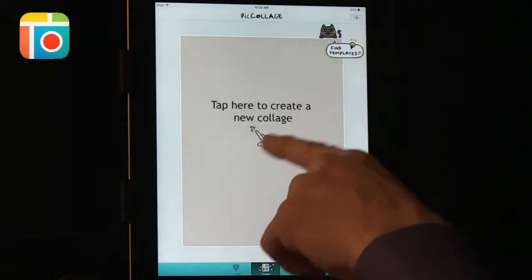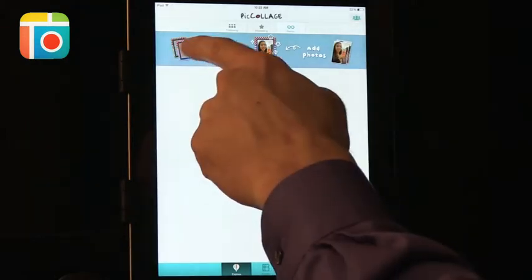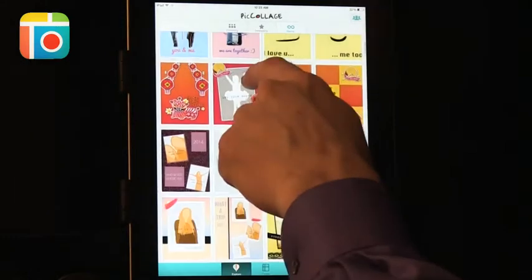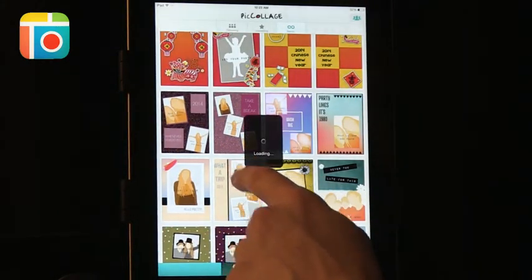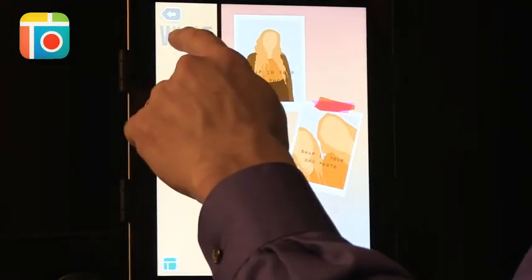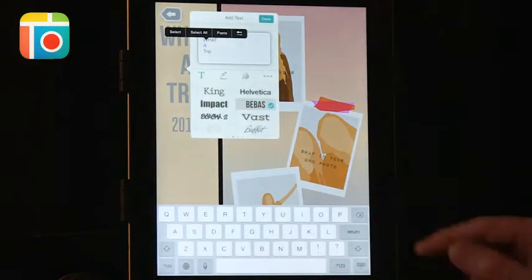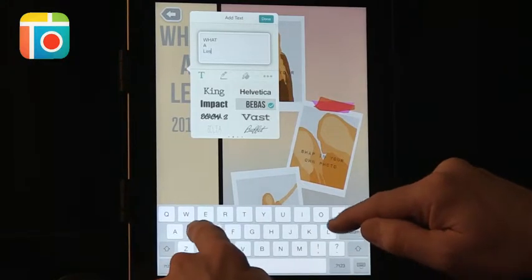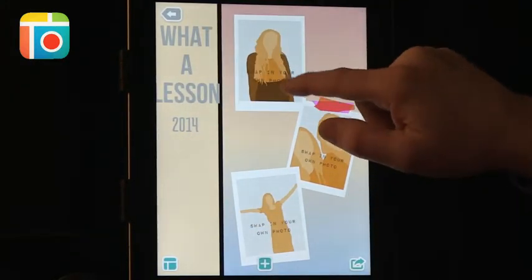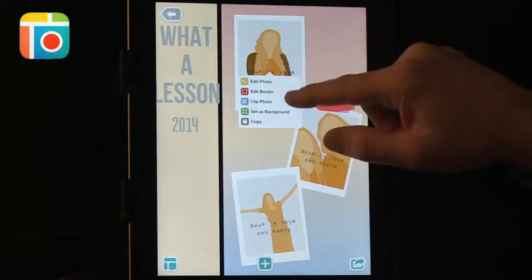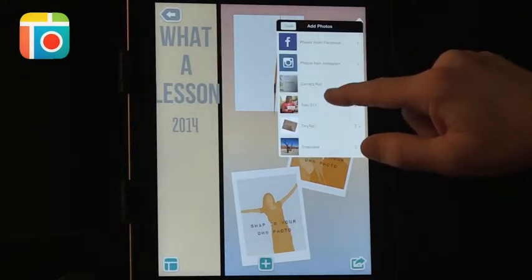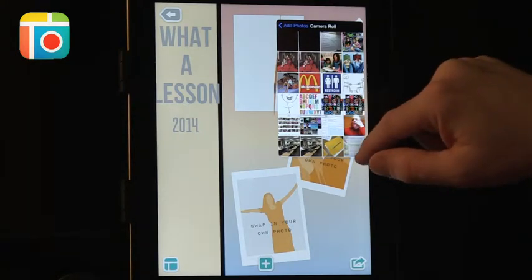The next one, and this is an app that many of the teachers liked, and also many of my undergrad students like, is Picolage. You can see that they have templates, or you can just tap to create. You can pick a template, there are lots of possible templates that can be used. So this is designed for a trip, but you can actually edit any of these things. If you go here, you can actually edit this, and say something like, what a lesson.